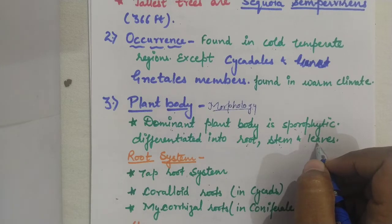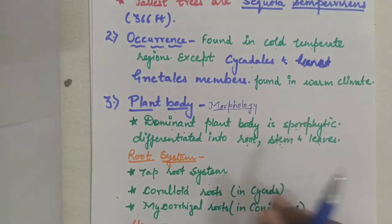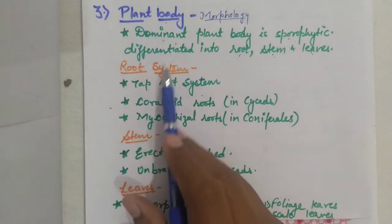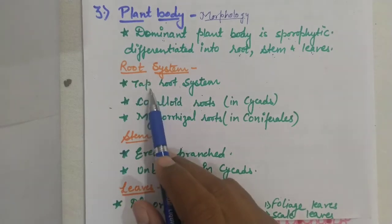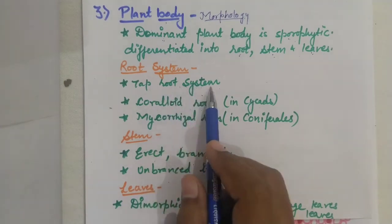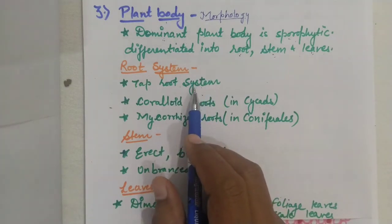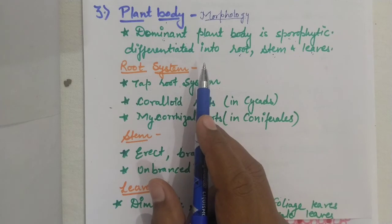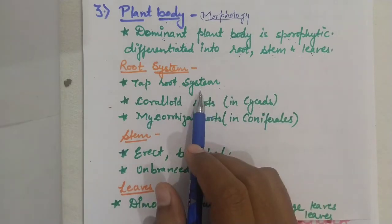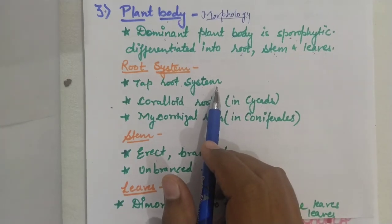We find true root, stem, and leaves in gymnosperms. The root system in almost all gymnosperms is a tap root system, to anchor the plant in the soil. Because the plants are so tall and woody, the tap root system keeps the plant erect and helps it withstand external forces.